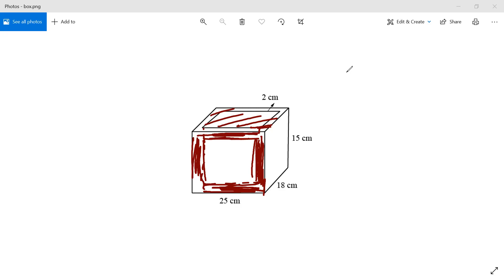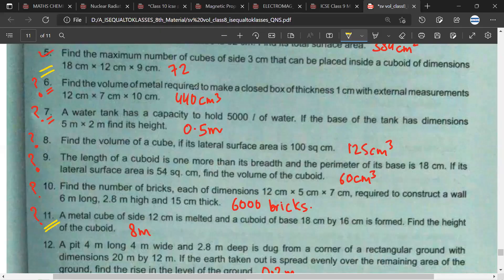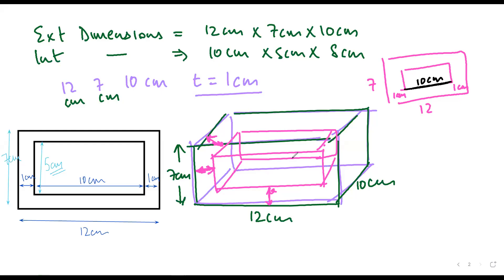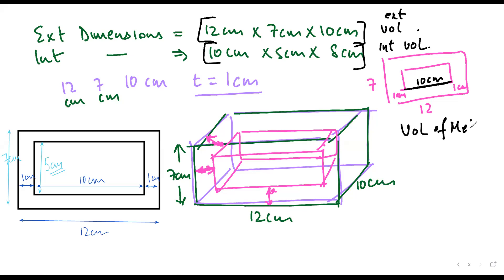The question is asking: find the volume of metal required to make a closed box of thickness one centimeter with external measurements 12, 7, and 10. What we understood is that 12×7×10 gives the external volume, and 10×5×8 gives the internal volume. To find the volume of metal, all I need to do is: external volume minus internal volume.